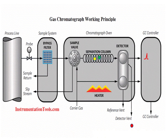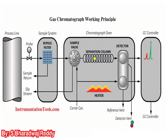The GC column will be maintained at a standard temperature — 85 degrees Celsius, though this changes from vendor to vendor — with the heater. The sample gas will be heated for a certain time in the column.